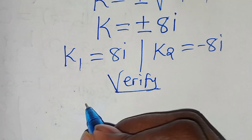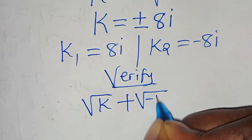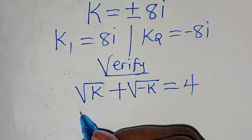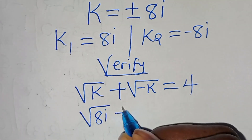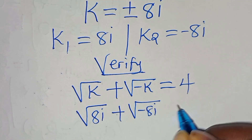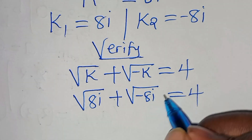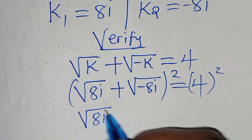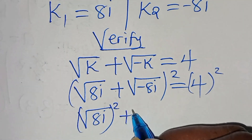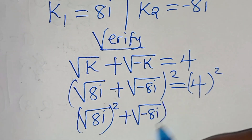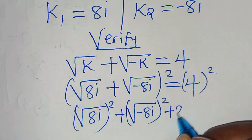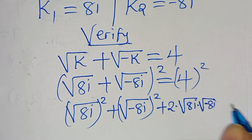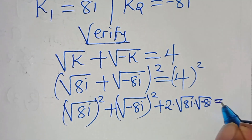Let's quickly verify if these two values of k satisfy the equation. Starting with k1: the square root of 8i plus the square root of minus 8i equals 4. Squaring both sides gives the square root of 8i squared, plus the square root of minus 8i squared, plus 2 times the square root of 8i times the square root of minus 8i, equal to 4 squared, which is 16.